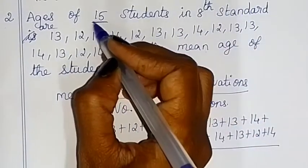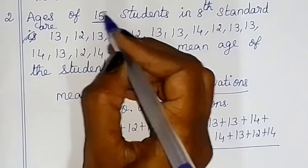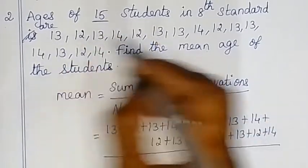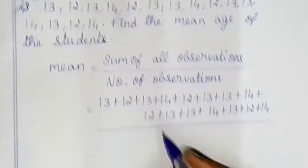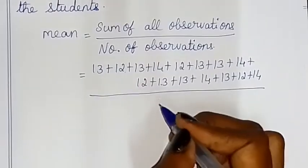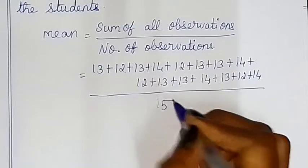The number of observations is 15 students. So we count 15 students, and we divide by 15.